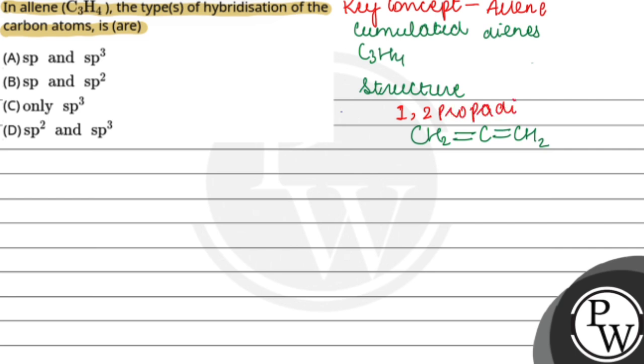In the question, we need to find the hybridization of carbon atoms. So let's draw it out: CH2 double bond C double bond CH2. Now we check hybridization.